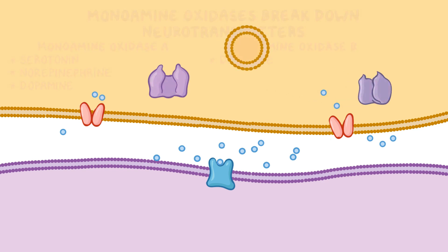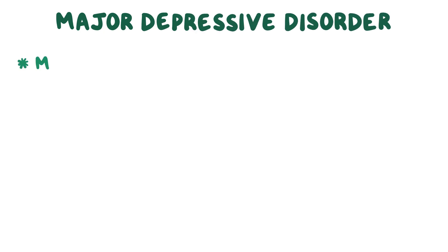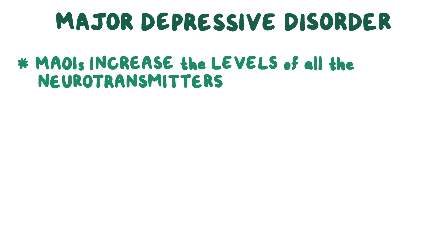The neurotransmitters that are not broken down are packaged into pre-existing vesicles, waiting to be released once more. Now, in people with major depressive disorder, MAOIs are used to increase the levels of all the neurotransmitters related to depression.